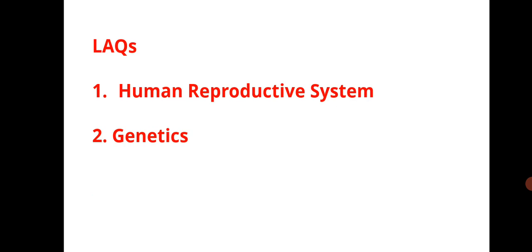Next and last is the LAQ section. For 16 marks, if you practice two LAQs on the human reproductive system — for male and female — and genetics, that covers the important LAQ questions. The full list of all questions for SAQ, VSAQ, and LAQ is given in the description, along with the blueprint and a model paper.